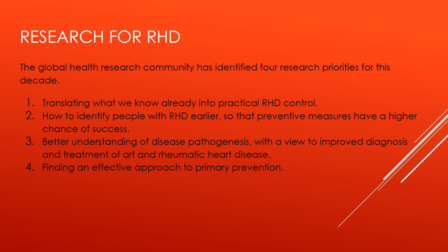Challenge number two is how to identify people with rheumatic heart disease earlier so that preventative measures have a higher chance of success. This means standardization of echocardiographic screening, developing evidence-based diagnostic criteria, determining the significance of subclinical carditis, and determining the cost effectiveness of screening. Challenge number three is developing a better understanding of disease pathogenesis, including the immunology of acute rheumatic fever and how genetics plays a role. Challenge number four is finding an effective approach to primary prevention, which means developing a vaccine for rheumatic fever, determining the role of primary prophylaxis of streptococcal sore throat, and determining the role of controlling skin infection in preventing the disease.